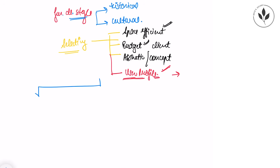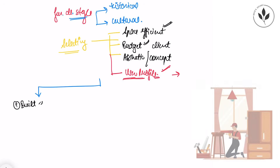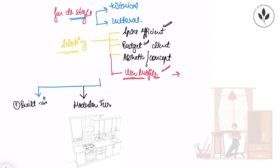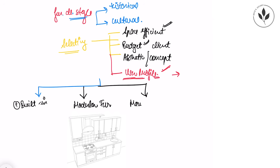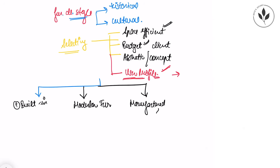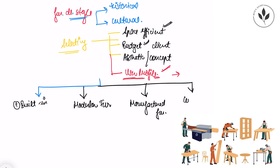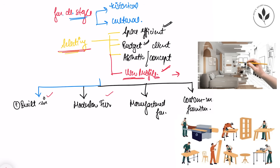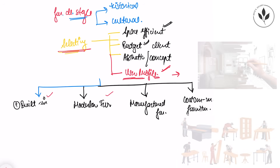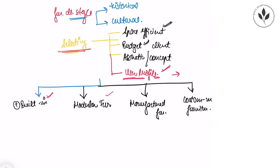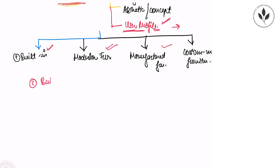Now let me tell you about the four types of furniture. The very first type is built-in furniture. The second type is modular furniture. The third type is manufactured furniture. And the last type is custom made furniture. We will select from these types at the time of furniture selection for our project.